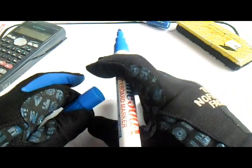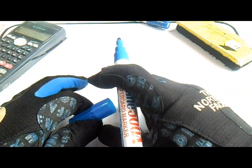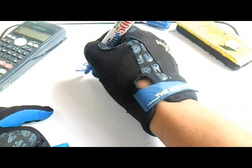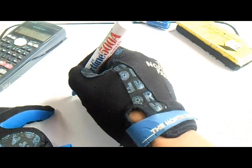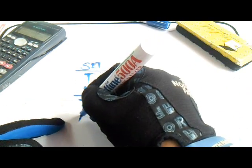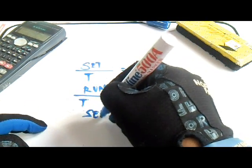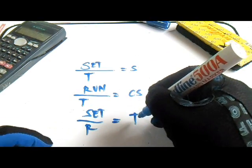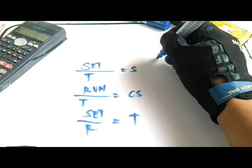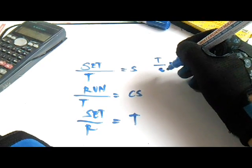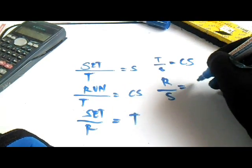So our formulas for a triangle to find the function of angles are: Set divided by Travel equals Sine; Run divided by Travel equals Cosine; Set divided by Run equals Tangent; Travel divided by Set equals Cosecant; Run divided by Set equals Cotangent. These are our formulas to find angles.